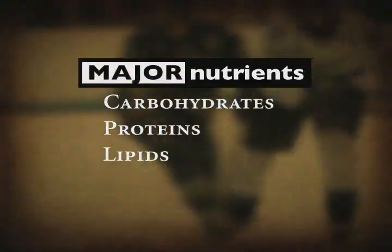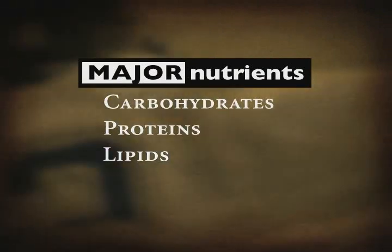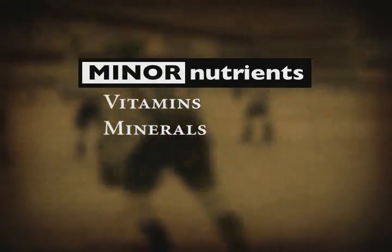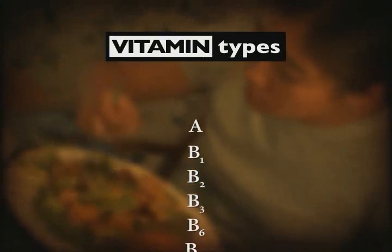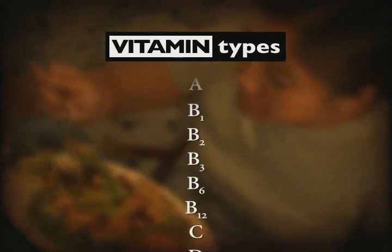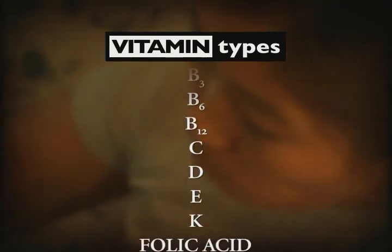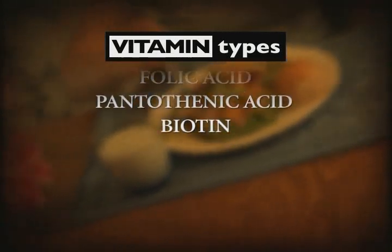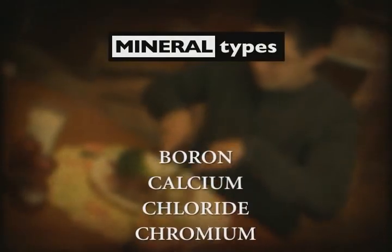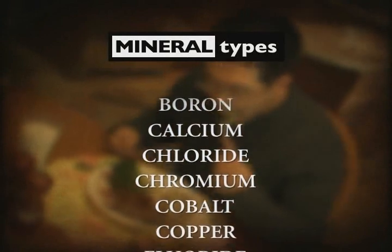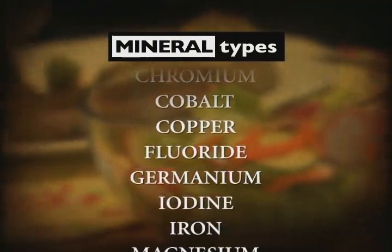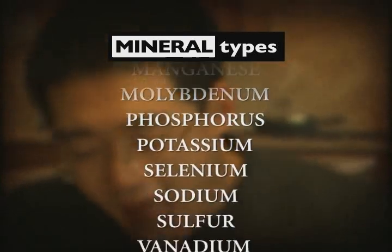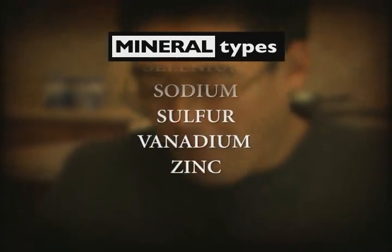In addition to the major nutrients, the body requires small amounts of minor nutrients — the vitamins and minerals. Vitamins are organic compounds that regulate metabolism and assist in the biochemical processes that release energy from digested foods. Minerals are inorganic elements that function as coenzymes, enabling the body to perform its various functions, including energy production, growth and healing.